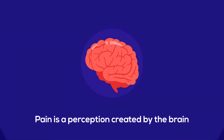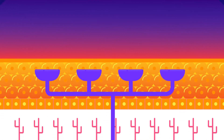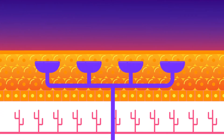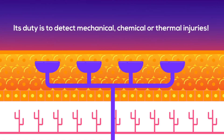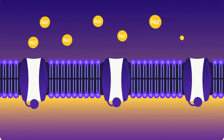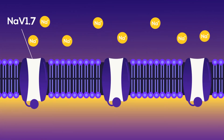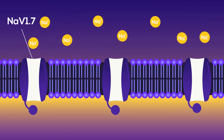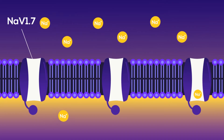Nociceptors are specialized pain receptors located in and around our skin, muscles, joints, and internal organs. Their duty is to detect mechanical, chemical, or thermal injuries. Nociceptors have a specialized sodium channel called Nav 1.7, which allows sodium ions to enter the cell and activate it.